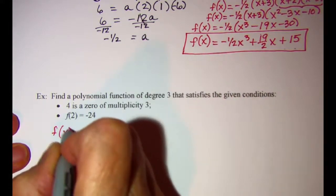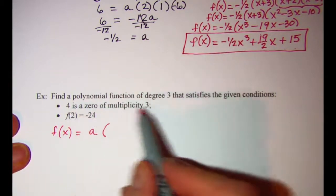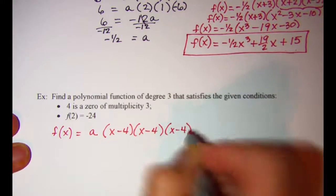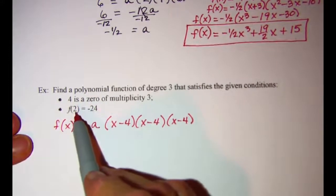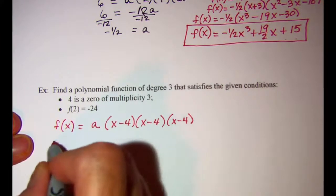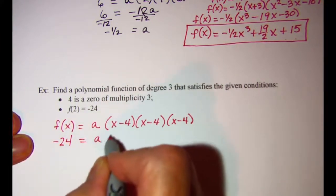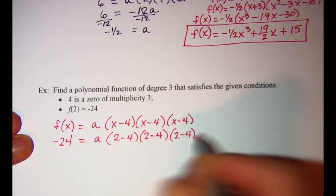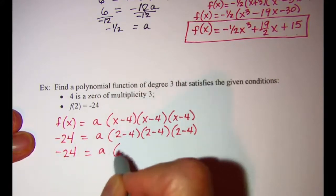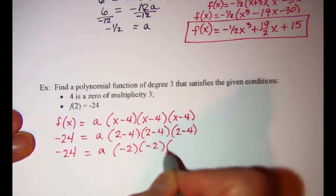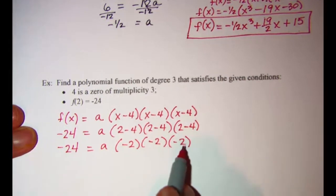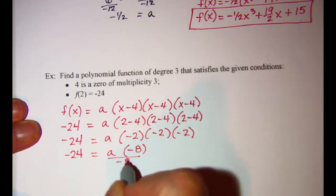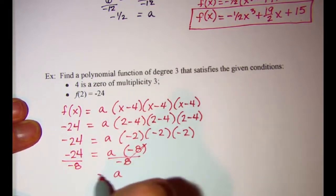We have f of x equals a times x minus 4, times x minus 4, times x minus 4. Substituting x equals 2 and f of x equals negative 24: negative 24 equals a times 2 minus 4, times 2 minus 4, times 2 minus 4, which is a times negative 2 times negative 2 times negative 2, giving negative 8a. Dividing both sides by negative 8, a equals 3.